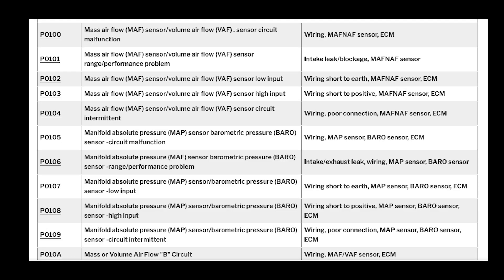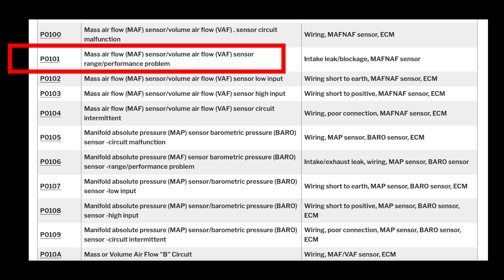There are a number of diagnostic trouble codes related to the performance and ECM testing of the mass airflow sensor. These too may be set when a problem occurs with the sensor's ability to accurately do its job. Common among them is the P0101, or Mass Airflow Range Performance DTC.